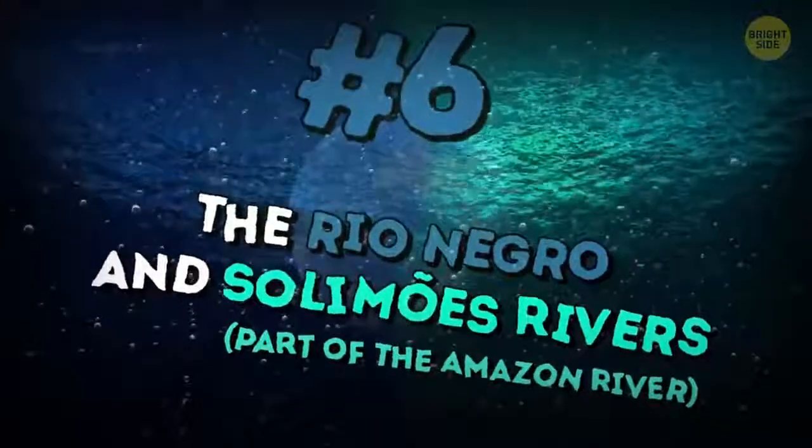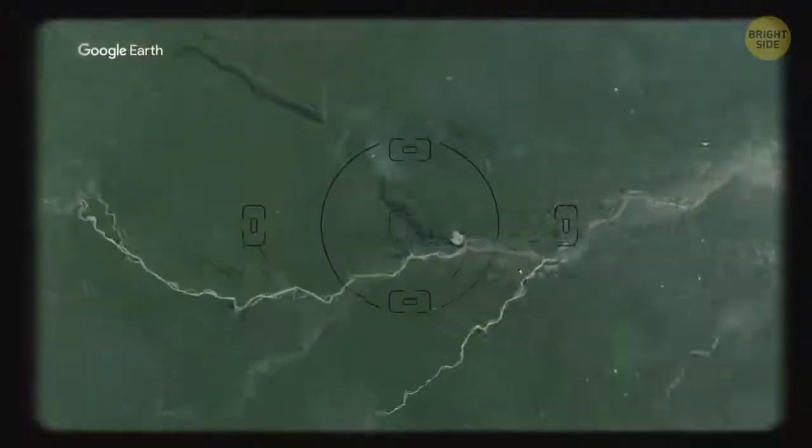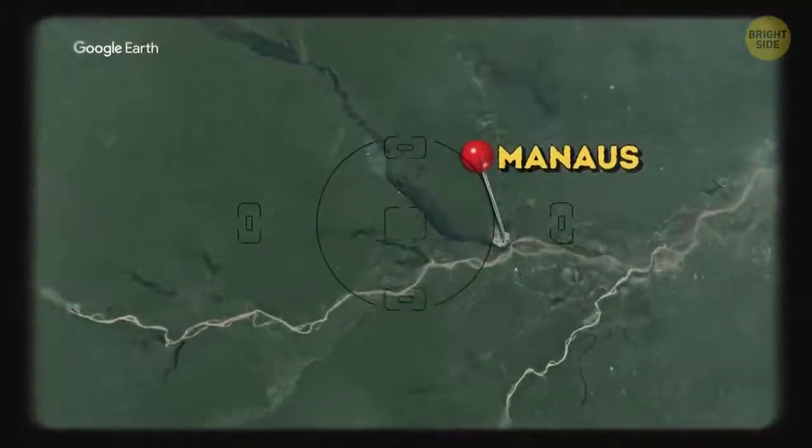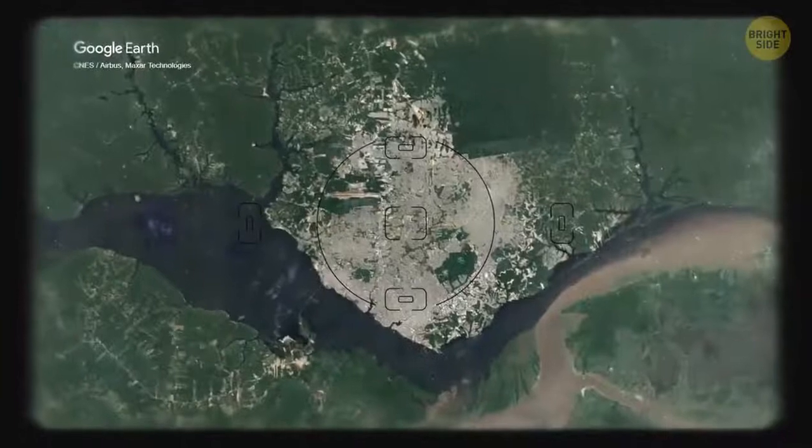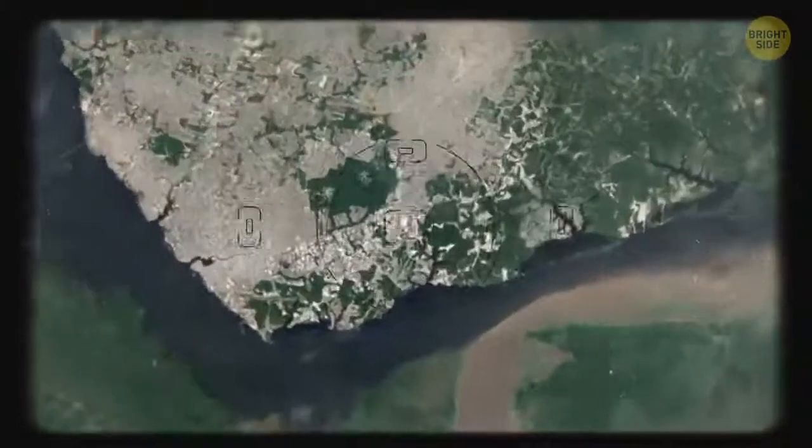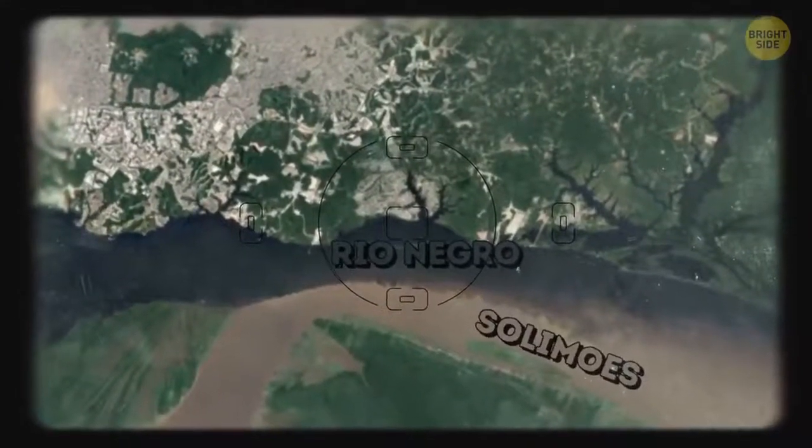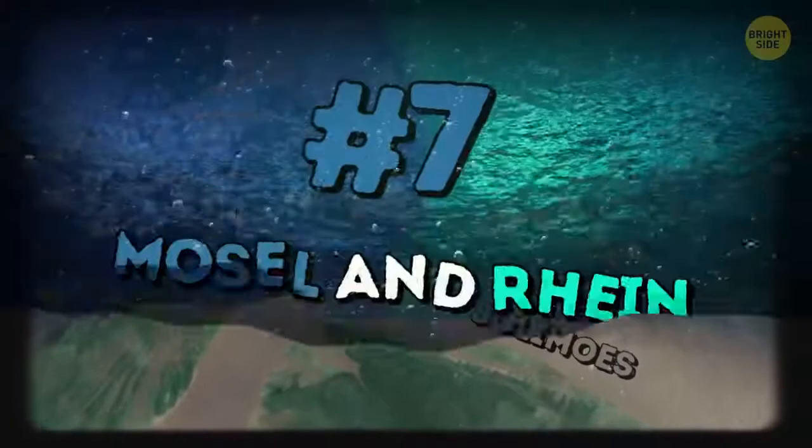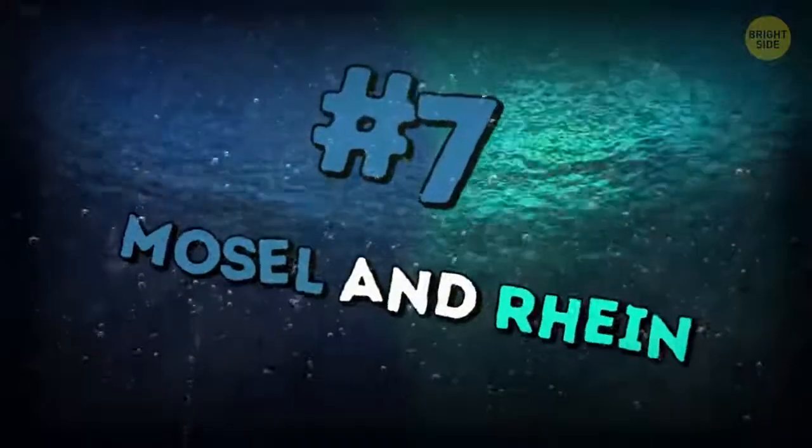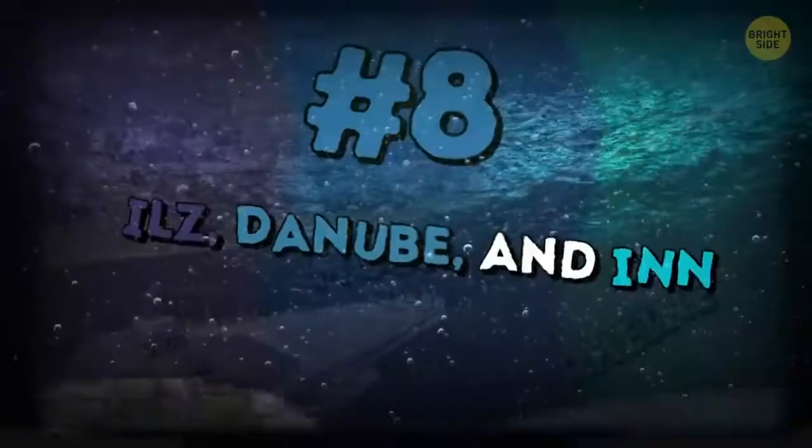6. The Rio Negro and Solomoes rivers, part of the Amazon River. Six miles from Manaus, in Brazil, Rio Negro and Solomoes rivers run into each other but don't mix for about 2.5 miles. The Rio Negro is dark and Solomoes light. They have a different temperature and speed of flow. 7. Moselle and Rhine. They meet at Koblenz, Germany. Rhine has lighter water and Moselle darker.